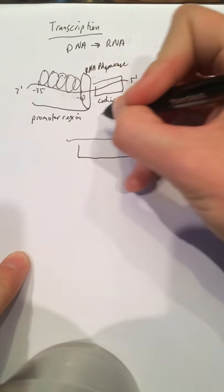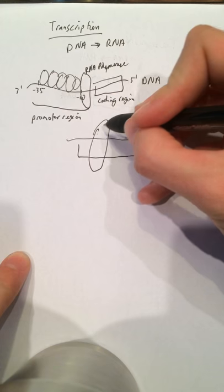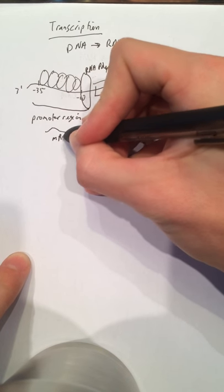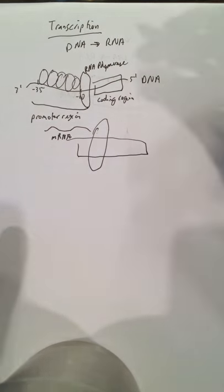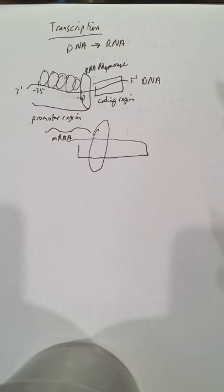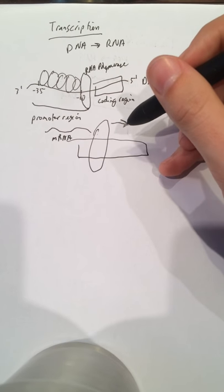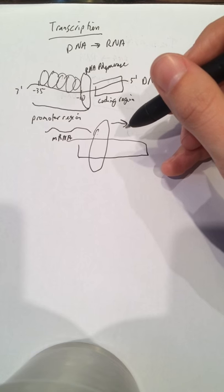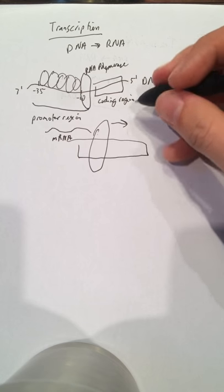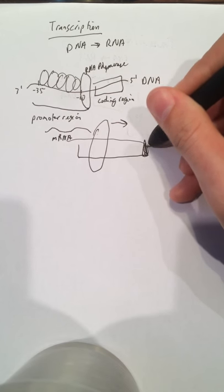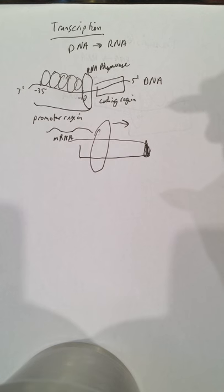And so as it moves through this coding region, mRNA begins to get produced. The RNA polymerase continues to travel until it gets to a stop codon—there are lots of stop codons, but we'll just say whatever this is right here is a stop codon. That's also called the terminator sequence.